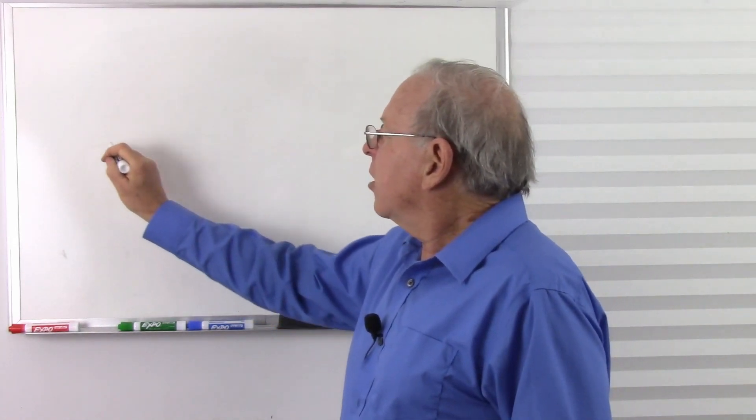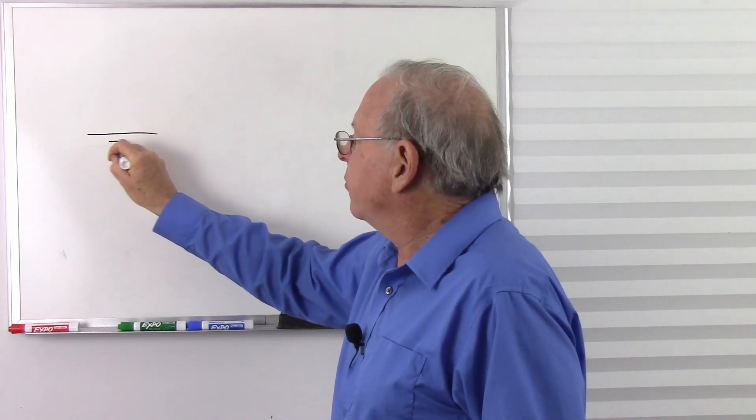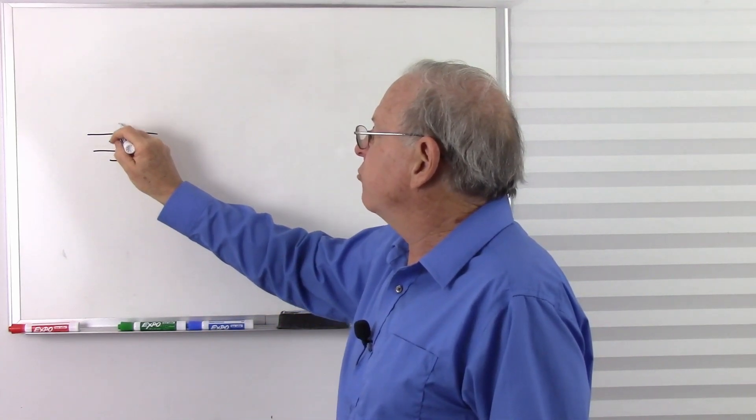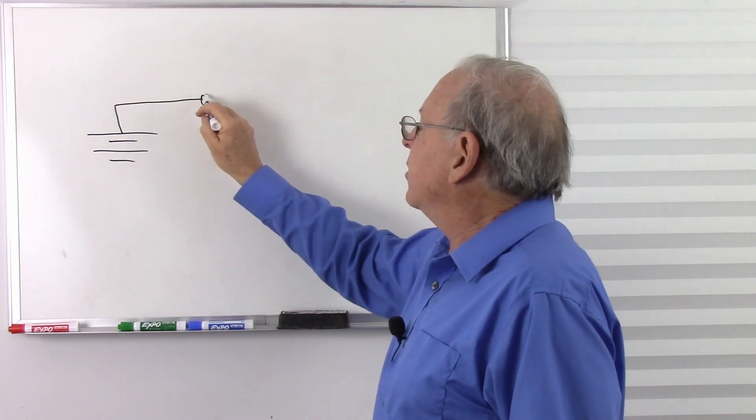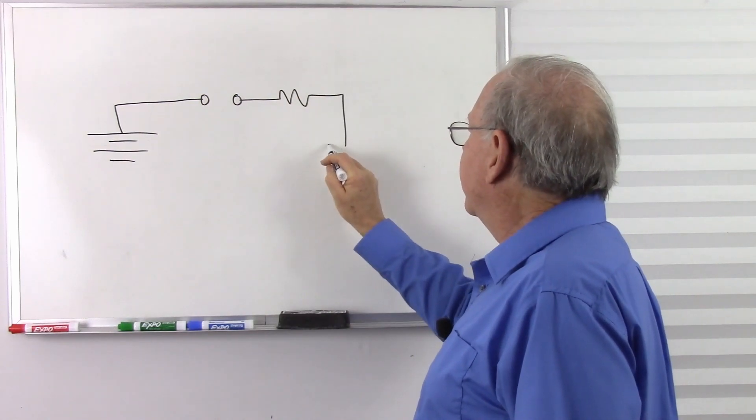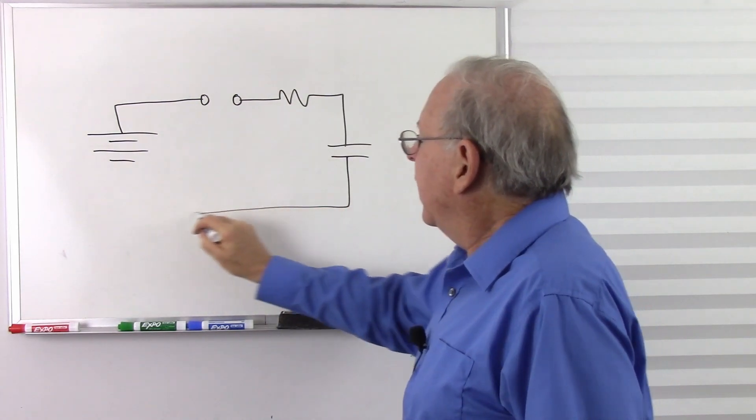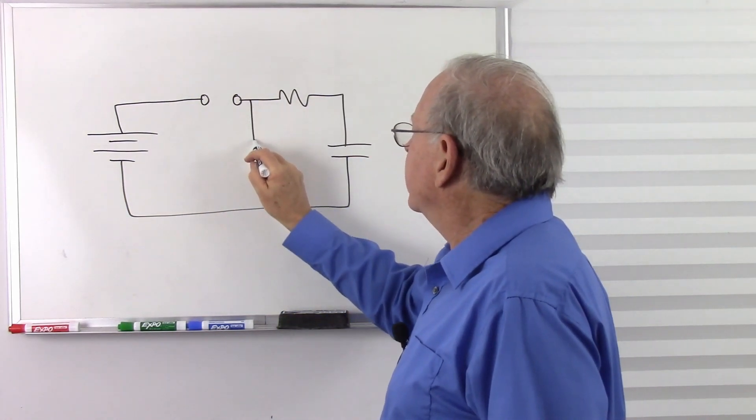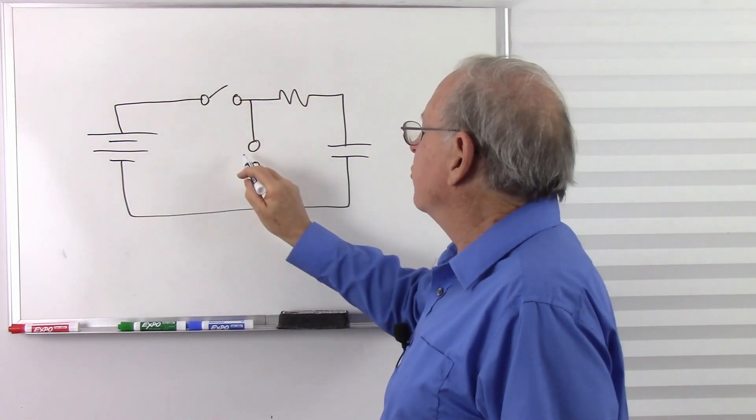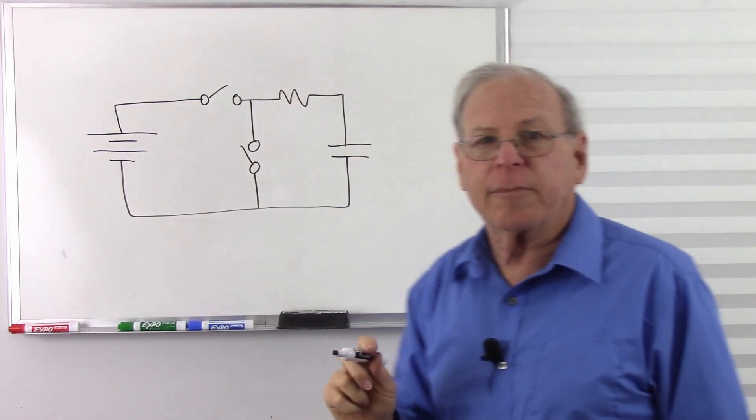Let's take a quick look at our charge circuit so we can see what his question is. Here's our basic demonstration circuit about how capacitors charge. We have a battery, a switch, a resistor, and a capacitor. Let's put another switch here.